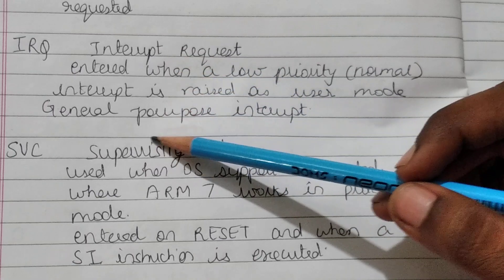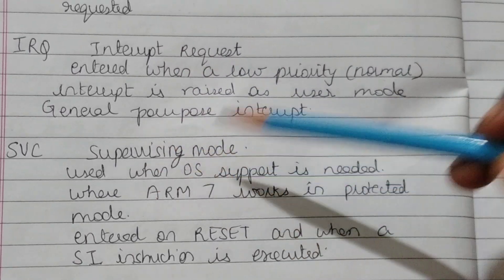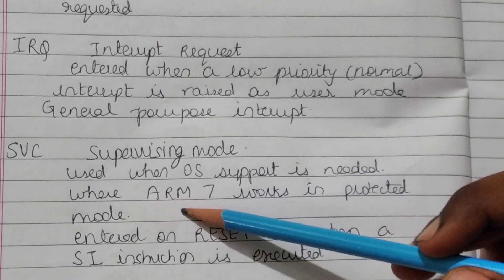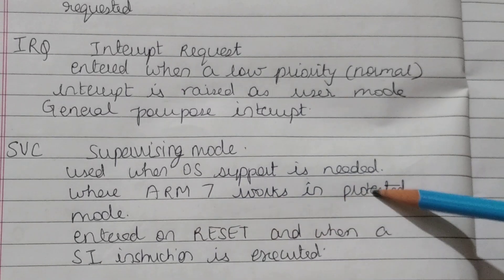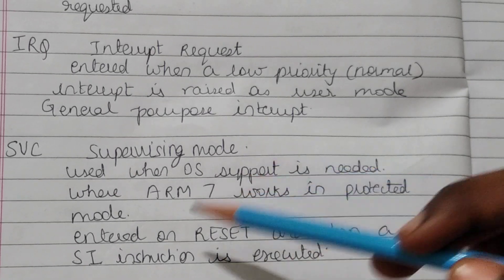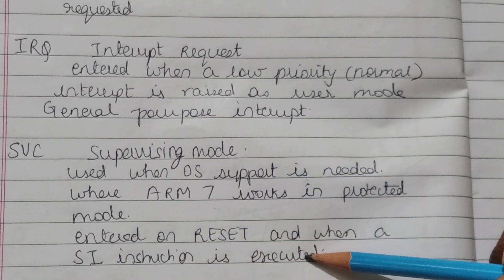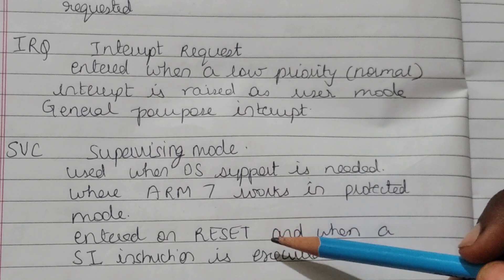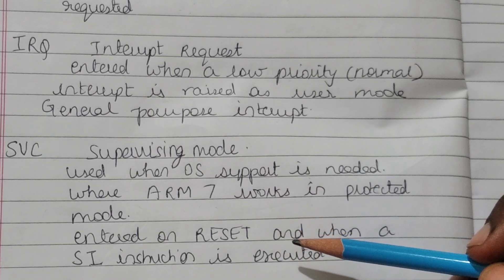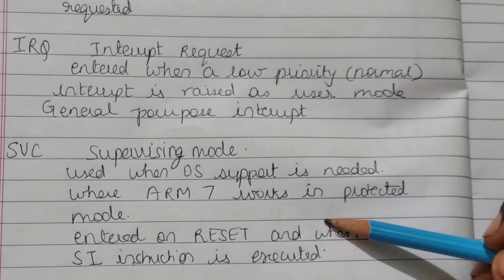Then comes the SVC, which is the supervising mode. Used when operating system support is needed where ARM7 works in protected mode. Entered on reset and when a SI instruction is executed. So supervisory mode is used when OS support is needed where ARM7 works in the protected mode.